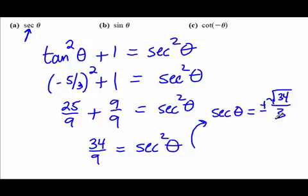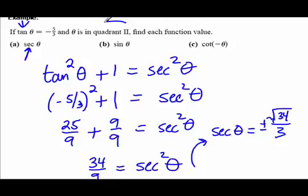The plus or minus requires us to use the quadrant information. In quadrant 2, sine is positive, which means cosine is negative, and therefore secant is also negative. So we choose the negative value — which matches the answer we got earlier with the triangle method. It doesn't matter to me which method you use; I'm just showing you that you have options.